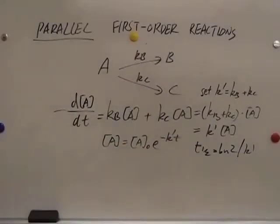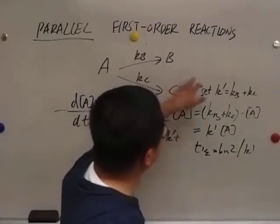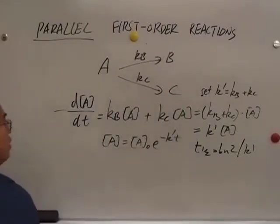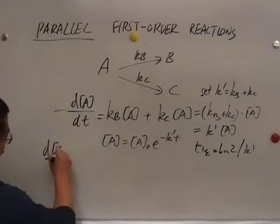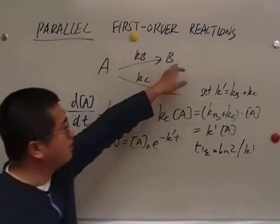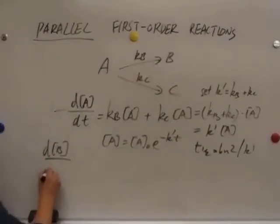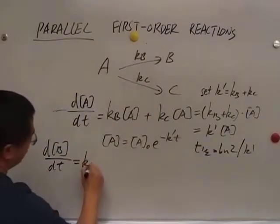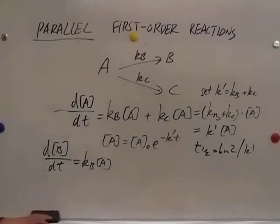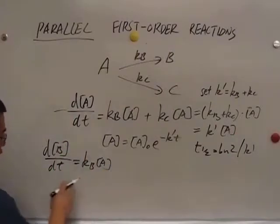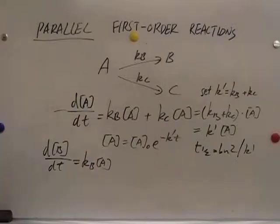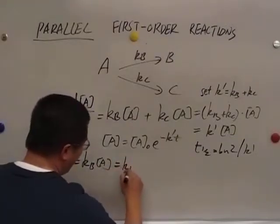Alright, what about the production rate for B? B is involved in only one elementary reaction. So we have an expression here. Again, we're trying to separate the variables, but you have A, you have B, you have t. It looks a little complicated, but we do know this A is a function of time.